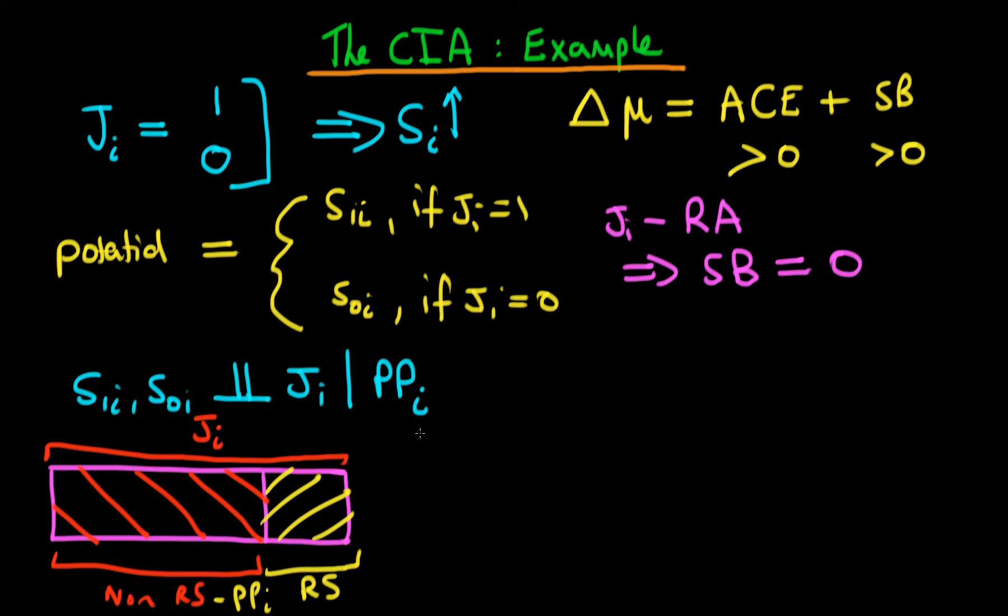So to see this, what we're going to do is we're going to just jump straight ahead and look at the selection bias term. We know that the selection bias term in this circumstance, when we're conditioning on past performance, is equal to the expectation of S0i, given that Ji is equal to 1, and also given that individual's level of past performance.